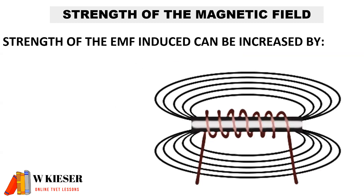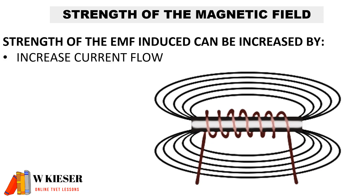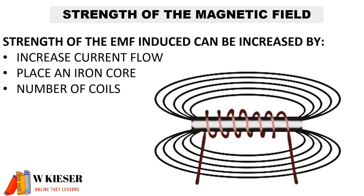To determine the strength of a magnetic field, the strength of the EMF can be increased by increasing the current flow, placing an iron core inside the coils, and increasing the number of coils.